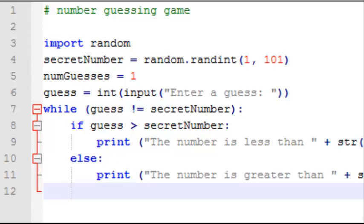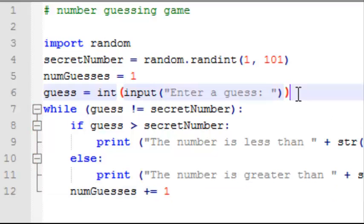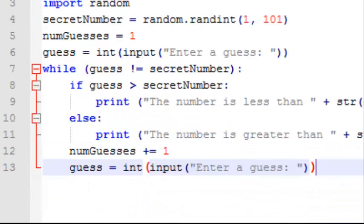And then we want to increment the number of guesses by 1. Now we'll get the next guess. But the next line of code is going to be exactly the same as this one up here. So we can just copy and paste this. That pretty much wraps up our while loop.